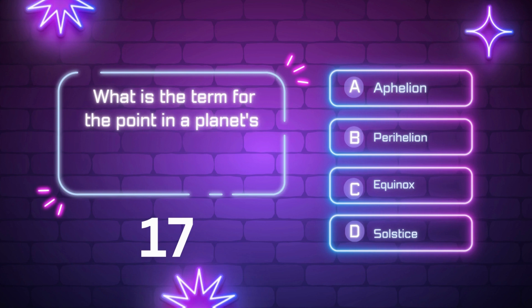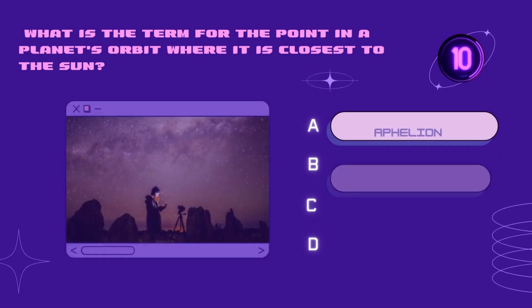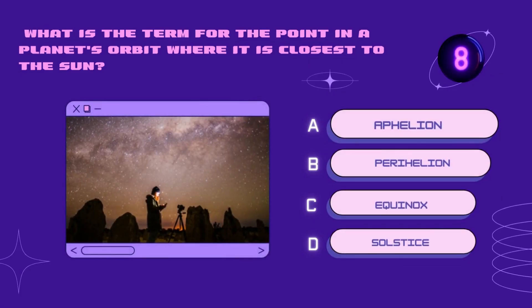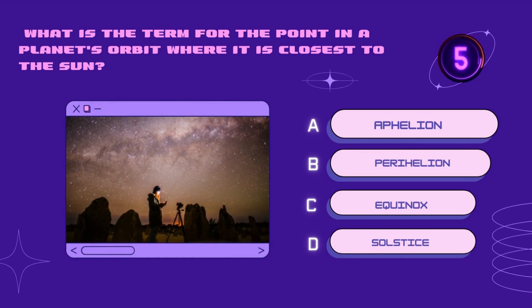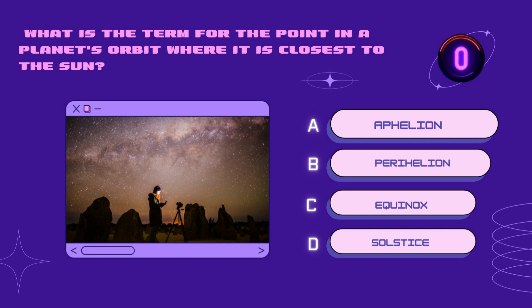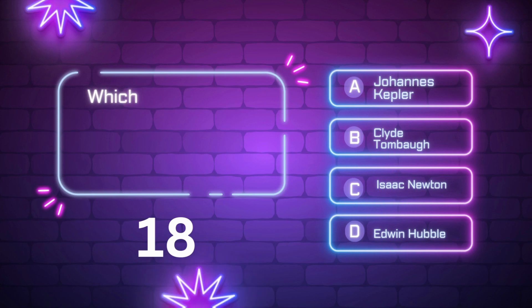What is the term for the point in a planet's orbit where it is closest to the sun? Perihelion, aphelion, equinox, solstice. Your time starts now. Right answer is perihelion.